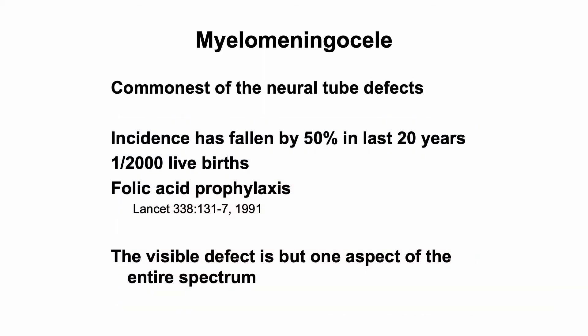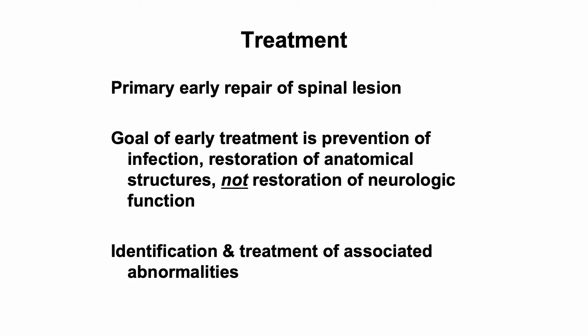Myelomeningocele is the commonest of neural tube defects. The incidence has fallen by 50% in the last 20 years, felt to be in part related to folic acid prophylaxis, although this does not fully explain the change over time. It is important to recognize that the visible defect is only one aspect of the entire spectrum of the problem. The treatment is directed, at the outset, toward repair and closure of the skin to prevent infection. The postnatal repair is not designed to restore anatomic or neurologic function, and it is also important to identify and treat the associated abnormalities.